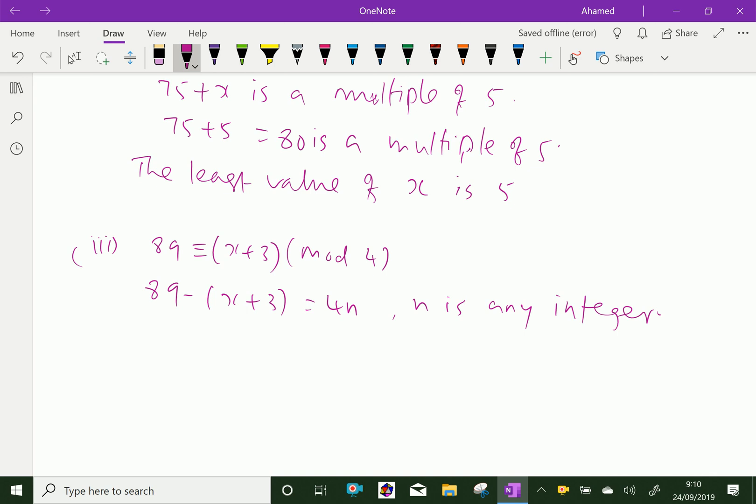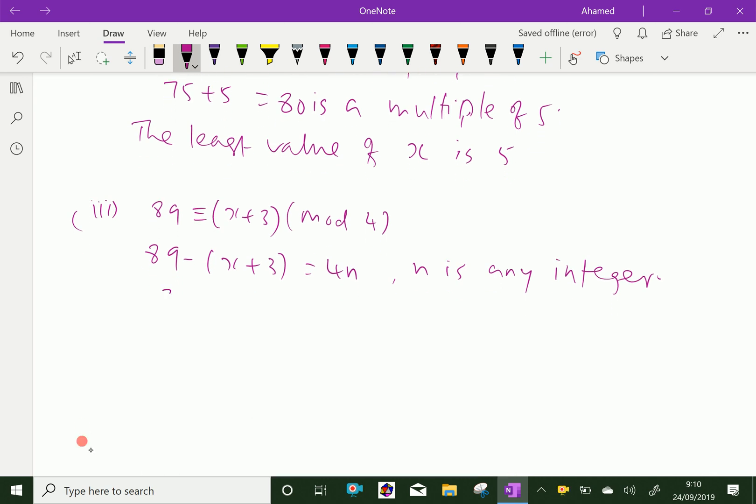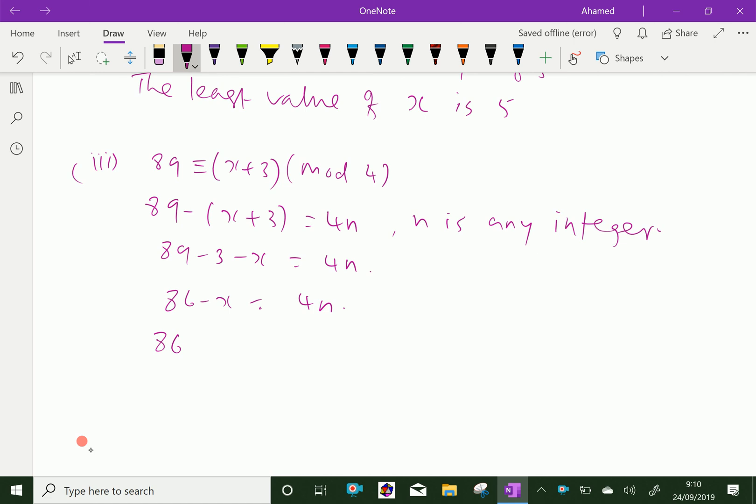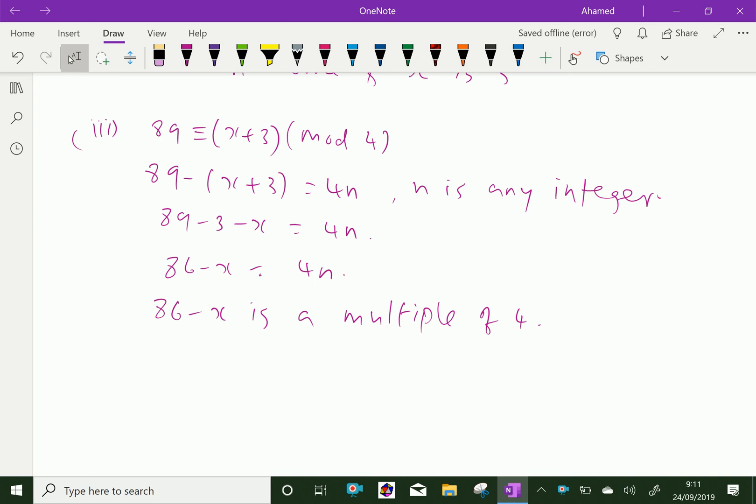Then, 89 minus 3 equals 4n. 86 minus x equals 4n. Therefore, 86 minus x is a multiple of 4. So, 86 is not a multiple of 4, but 84 is a multiple of 4.